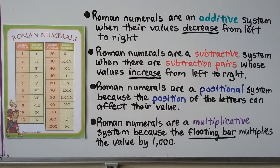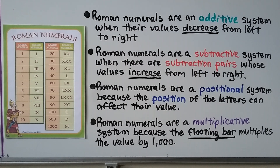Roman numerals are an additive system — they use addition when values decrease from left to right. They are also a subtractive system — using subtraction when subtraction pairs have values that increase from left to right. They are a positional system because the position of the letters can affect their value, as with subtraction pairs. And they are a multiplicative system because the floating bar multiplies the value by 1,000.